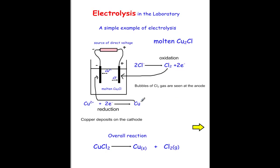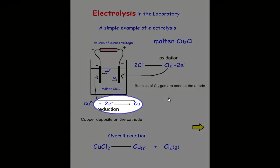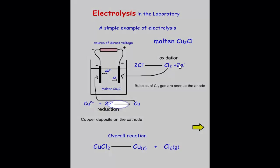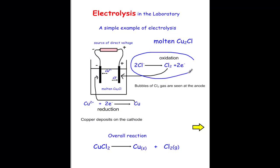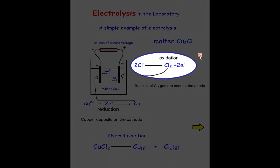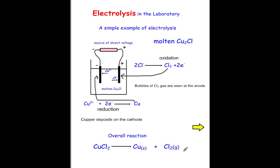The overall reaction combines the two half-equations: the reduction half and the oxidation half. Adding them together gives us copper chloride in molten solution forming copper and chlorine gas.